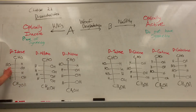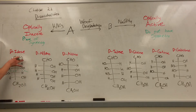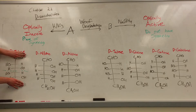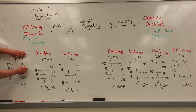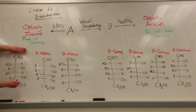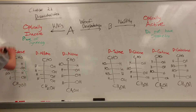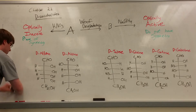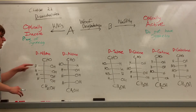For D-idose, after the HNO3 reaction gives COOH on both ends, we look at the four OHs in the middle. There is no plane of symmetry — we have OH then hydrogen going one way, and hydrogen then OH going the other — so D-idose is also ruled out.